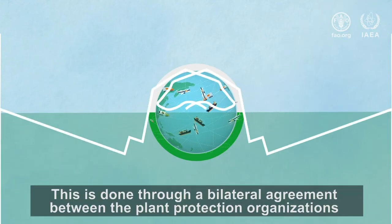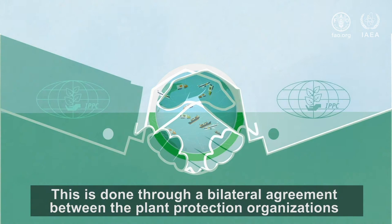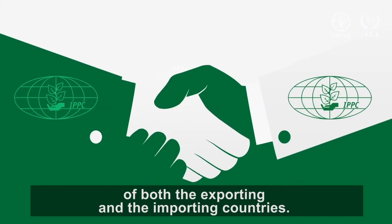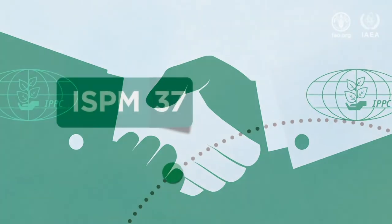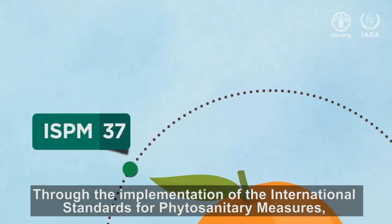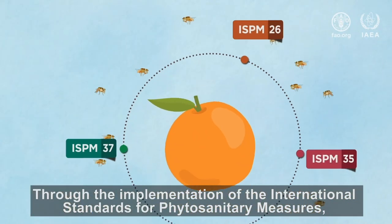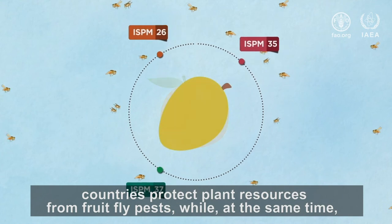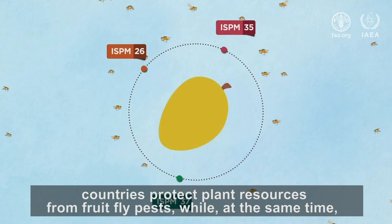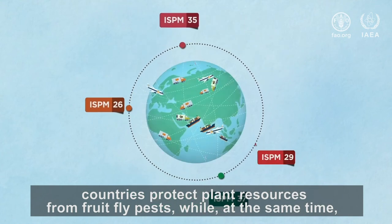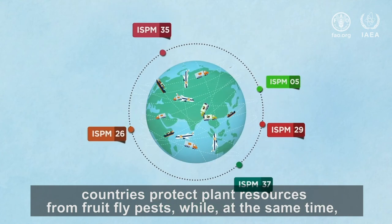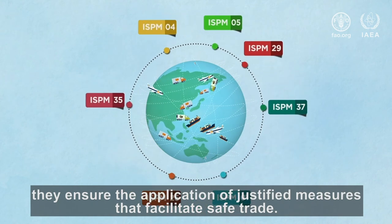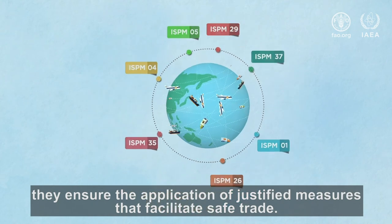This is done through a bilateral agreement between the plant protection organizations of both the exporting and the importing countries. Through the implementation of the international standards for phytosanitary measures, countries protect plant resources from fruit fly pests while, at the same time, they ensure the application of justified measures that facilitate safe trade.